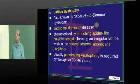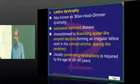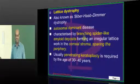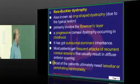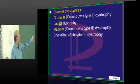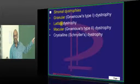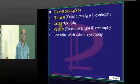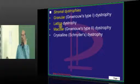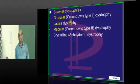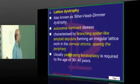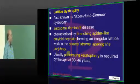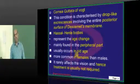Lattice dystrophy — remember one buzzword: amyloid deposits are found in lattice dystrophy. Lattice dystrophy is a stromal dystrophy. Stromal dystrophy more often requires penetrating keratoplasty because the stroma is the core of the cornea. Lattice dystrophy also typically requires penetrating keratoplasty.